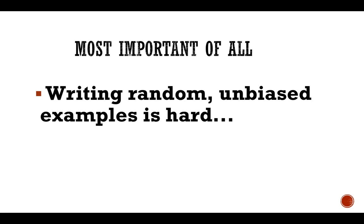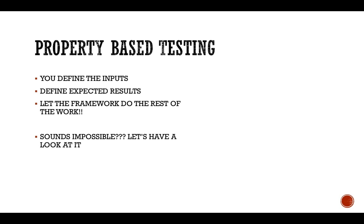The beauty of property-based testing is that with less code you can cover most of the cases. The most important point that example-based testing does not provide is writing random and completely unbiased examples. If you are a developer testing a function, you will have a preset set of values in mind. I'll demonstrate in the later part of the presentation how writing completely random, unbiased examples helps you catch errors that might creep into your system unknowingly. In property-based testing you define the inputs, define the expected result, and let the framework do all the work.